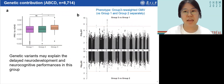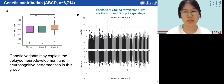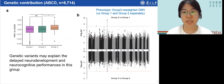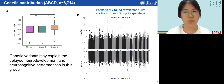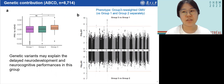In addition, we calculated polygenic risk scores (PRS) for ADHD using external GWAS summary statistics. Group 3 had higher PRS for ADHD than both groups 1 and 2. This led us to ask whether genetic variants could explain the delayed neurodevelopment and neurocognitive performance in this group. Due to limited sample size of imaging data, we used ABCD data to answer this question.